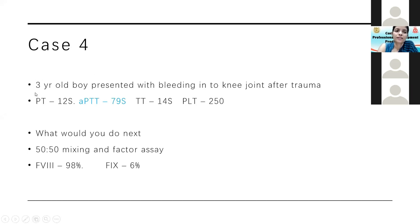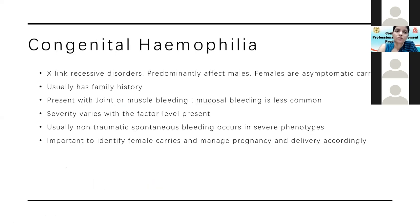Case 4: A three-year-old boy with bleeding into the knee joint after minor trauma, found to have prolonged APTT. Factor levels showed factor VIII and factor IX deficiency. Since he presented at three years of age with bleeding after trauma rather than spontaneous bleeding, this is likely mild haemophilia — severe haemophilia typically presents with spontaneous bleeding into joints or muscles, while mild and moderate haemophilia presents with bleeding after trauma.